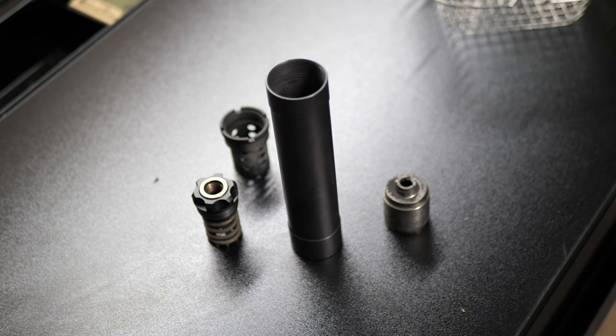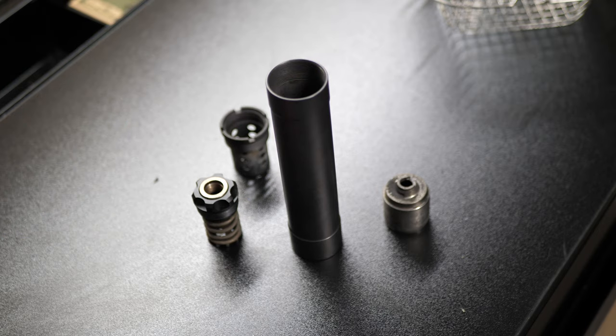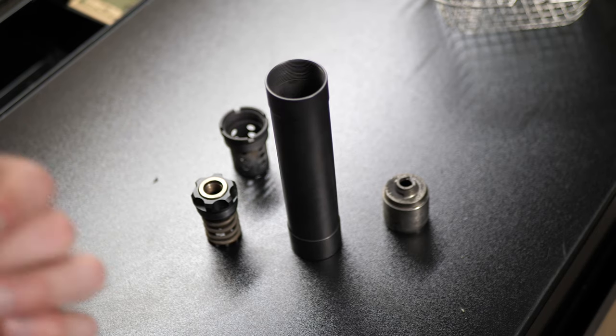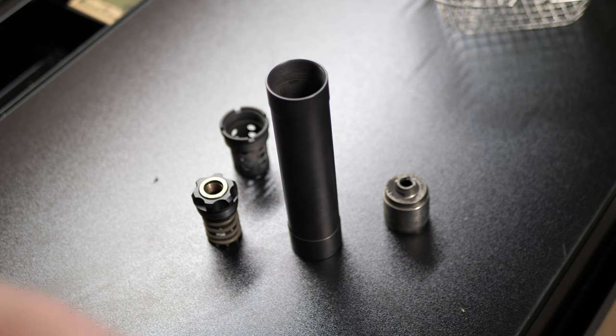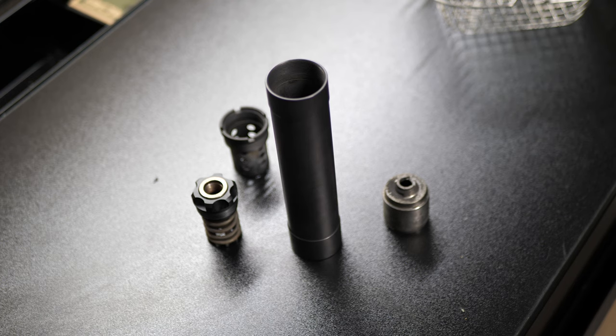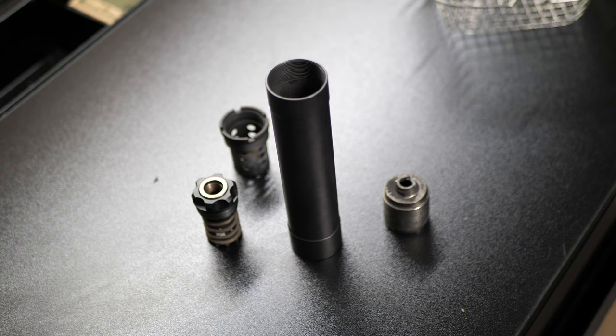So the big thing with the Optimus 9 is it is a multi-caliber suppressor, at least it was marketed originally. So there's lots of different configurations you can use this in, in order to use it on a ton of different firearms, which is really cool. And it's why I got this because I was like, oh, I don't want to go through the tax stamp process multiple times. I just want to get one can and I can use it on a ton of different firearms.